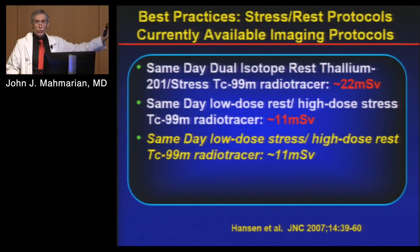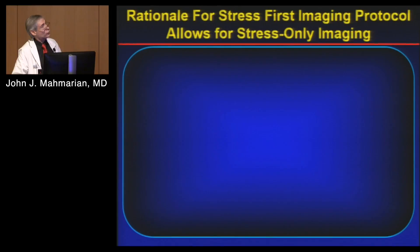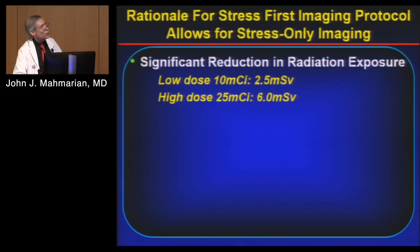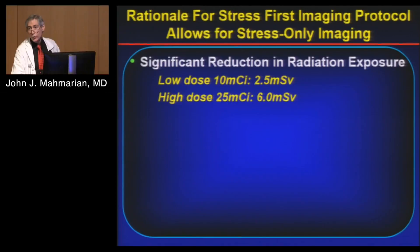We promote doing stress first, because if the first set of images are normal, you don't need a rest study — you can avoid the whole rest dose entirely. With stress-only imaging in normal patients, you can get down to 2.5 millisieverts of radiation exposure — down from 11-14 millisieverts. With new sophisticated gamma camera technology, we can even get down to 1 millisievert with a stress-only protocol.